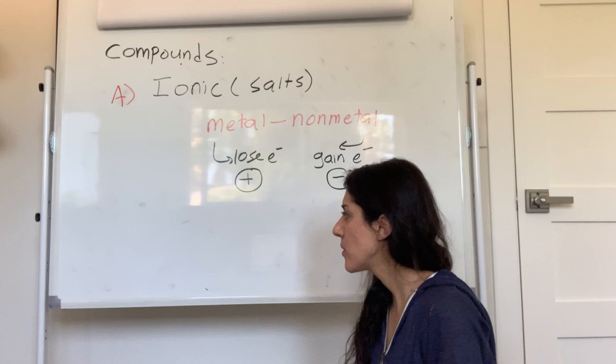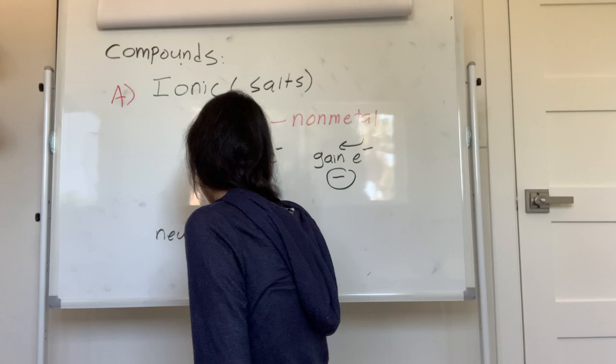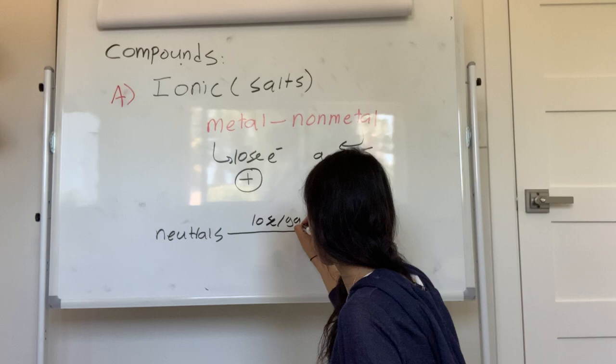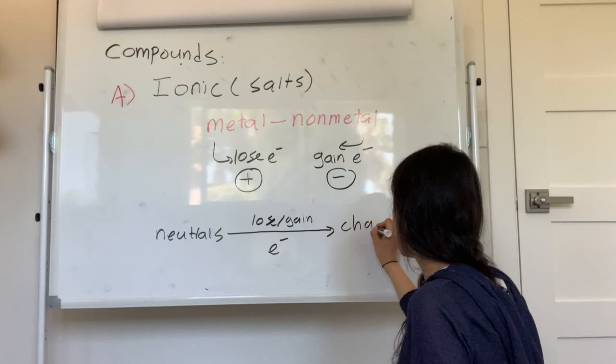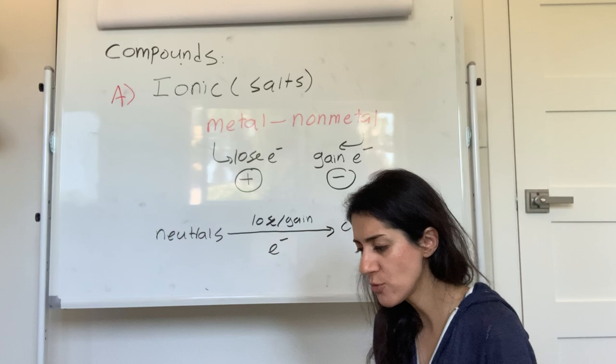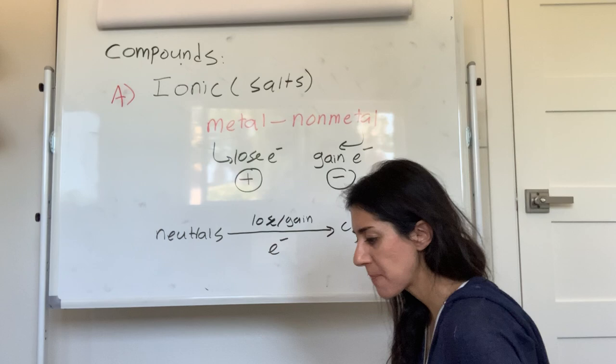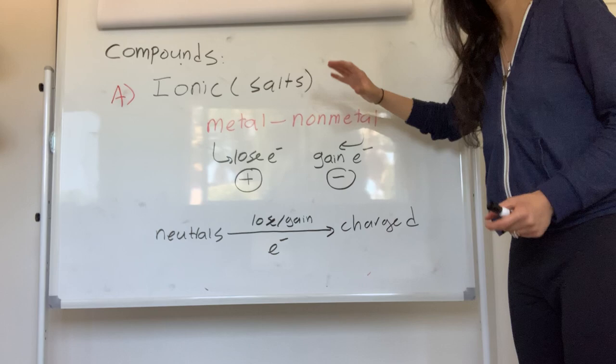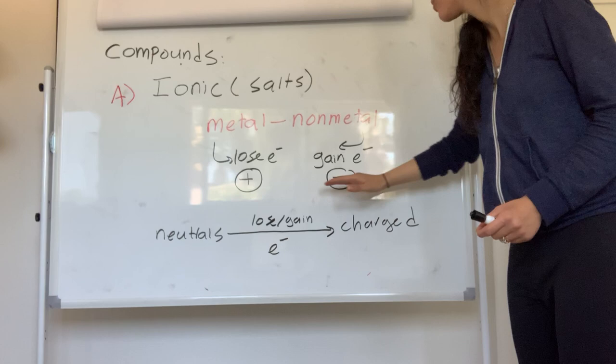Remember, elements on the periodic table are neutral. But sometimes elements lose or gain electrons to form compounds. If they lose electrons, they become positively charged; if they gain electrons, they become negatively charged. You can't lose protons or neutrons — those are in the nucleus — but you can play around with electrons.